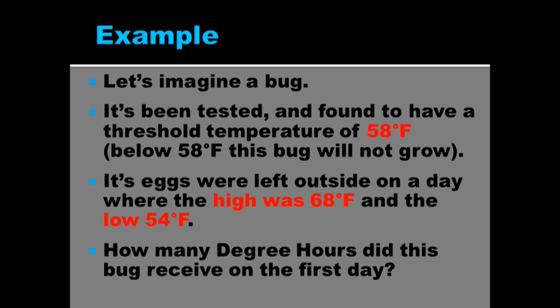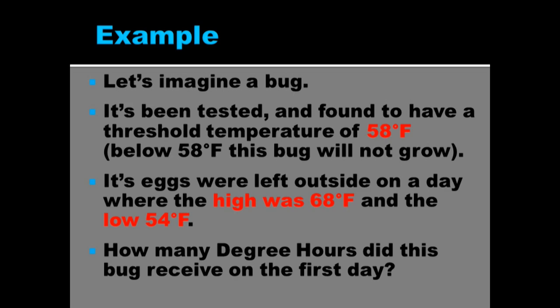We know that its eggs were left outside on a day where the high was 68 degrees and the low was 54. So we have that passing through that threshold temperature. So we know that it's going to be sometime above that temperature, sometimes below it. So how many degree hours did this bug receive on the first day?